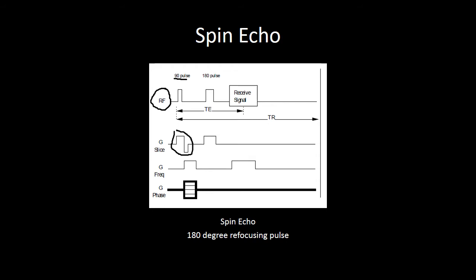The 180-degree pulse follows the 90-degree pulse, and that 180-degree pulse occurs at 1.5 TE, and the slice select gradient will also be on for your 180-degree pulse. At your time to echo, or your TE, that is the time at which you will be receiving your signal, and while you are receiving your signal, your frequency encoded gradient will be turned on. Your phase encoded gradient is variable, depending on which line of k-space you're filling, and so this is a representation of a variable phase encoded gradient.